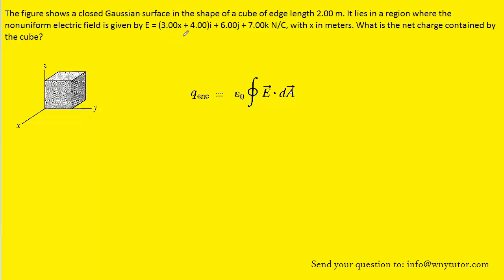If we look at the electric field equation, we can see that the j-hat component actually has a constant value — it just says 6.00. There's no variable next to it; it's not 6.00x or x squared or anything like that. So this electric field is constant in the j-hat component, which represents the y-direction. A similar story occurs in the k-hat component, the z-direction, where the electric field is also constant with a value of just 7.00.